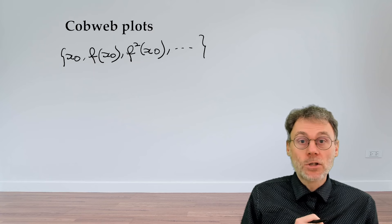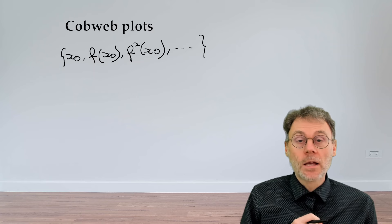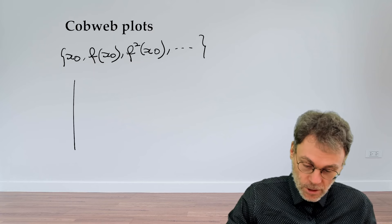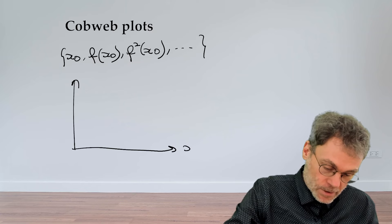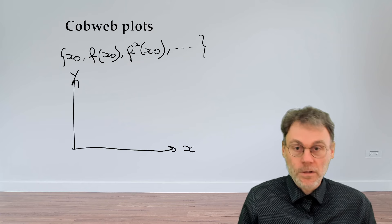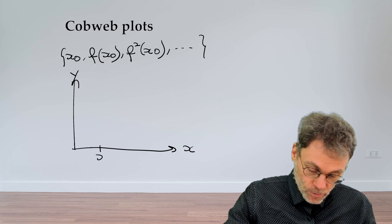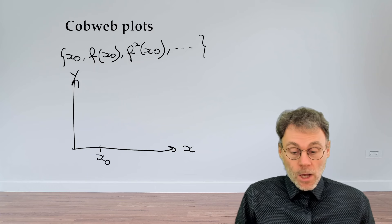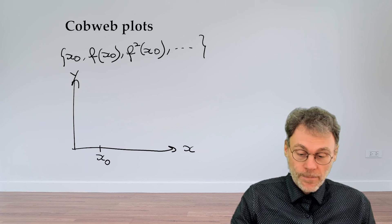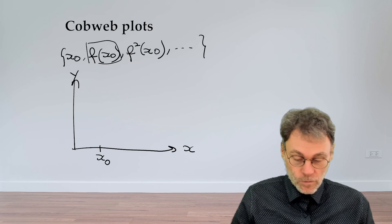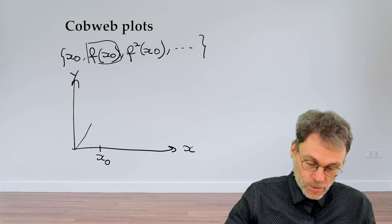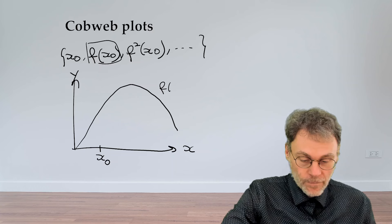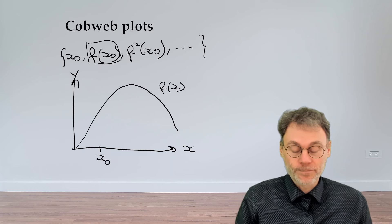What we now want to do is give some sort of graphical construction that will help you visualize or create the orbit. So let's get started. Let's create a diagram with x here and y over there, and we want to create the orbit of a certain initial condition x0. So the first thing we need to do is calculate f of x0. For that, we need to draw our map. So let's say here we have our f of x graph.